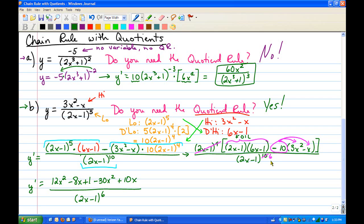And then we look for like terms, so we have 12x squared minus 30x squared, those are like terms. And we also have negative 8x plus 10x, those are like terms. So when we combine our like terms, 12 minus 30 is negative 18x squared, minus 8x plus 10x is plus 2x, and then we have that plus 1, over 2x minus 1 to the sixth. So that would be the final answer.